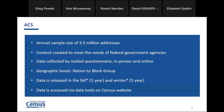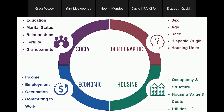Here's a graph that gives you a visual representation of the different types of topics in the ACS. There are a lot of different topics: sex, age, race, Hispanic origin, housing units on the demographic side. We have a lot of information on housing — occupancy, values, utilities. Then we have the social area, which includes data from education, marital status, fertility, grandparents, etc. And then we have the economic side, which has to do with income, employment, occupation, commuting to work. So it's a very substantial survey.